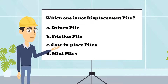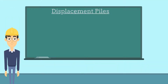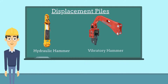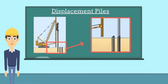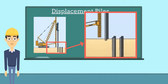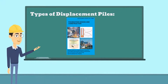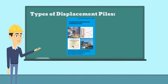Displacement piles are normally driven into the ground by hammers or vibratory drivers. The soil is displaced as the pile is driven or jacked into the ground, therefore it is called a displacement pile. According to publication from CEDD, displacement piles can be classified into two types.